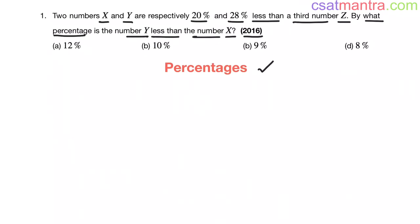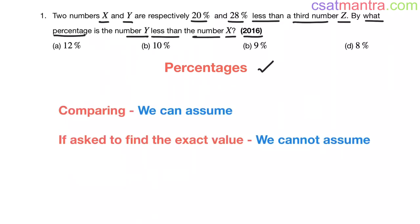One confusion most aspirants have in this chapter is they do not know when to assume the numbers and when not to assume. When we are comparing the numbers, we can assume them as some numbers, say 1 or 100. We do not need the exact values. All we are finding is how much this number is less than or greater than other number. So in that case, we can assume the numbers, there will not be any problem.